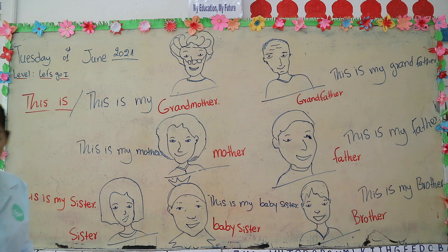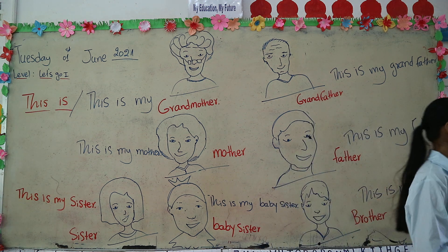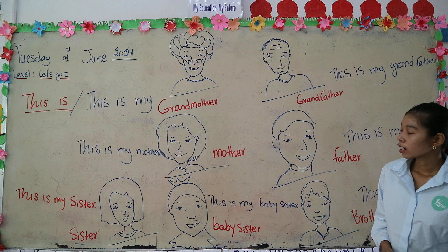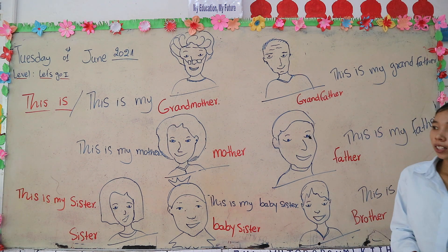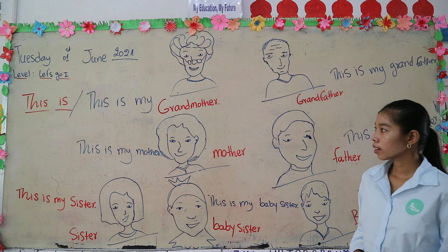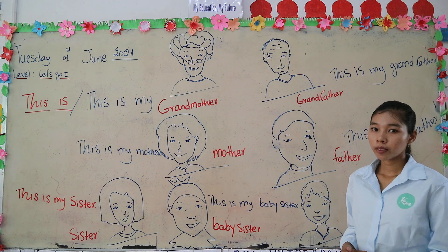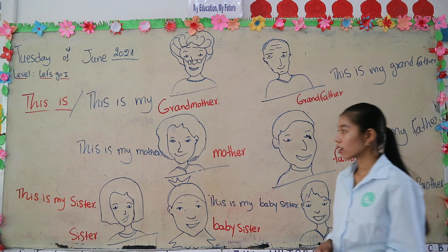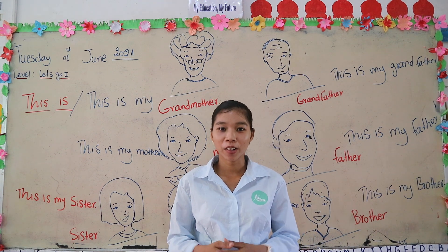We use 'this is' to tell someone about a person when they ask you, like when your friend comes to your home and asks who they see. You can say 'this is' or 'this is my...' to tell your friend. Okay, you got that. Thank you for watching my video. Bye-bye.